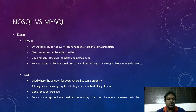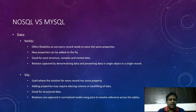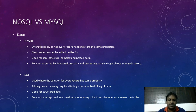For SQL, every record has the same properties — it handles structured data. Adding new properties may require altering the schema, which is a limitation, and backfilling of data may occur. Relations are captured in a normalized model using joins, which allows integrating multiple datasets, retrieving data, and resolving references across tables.